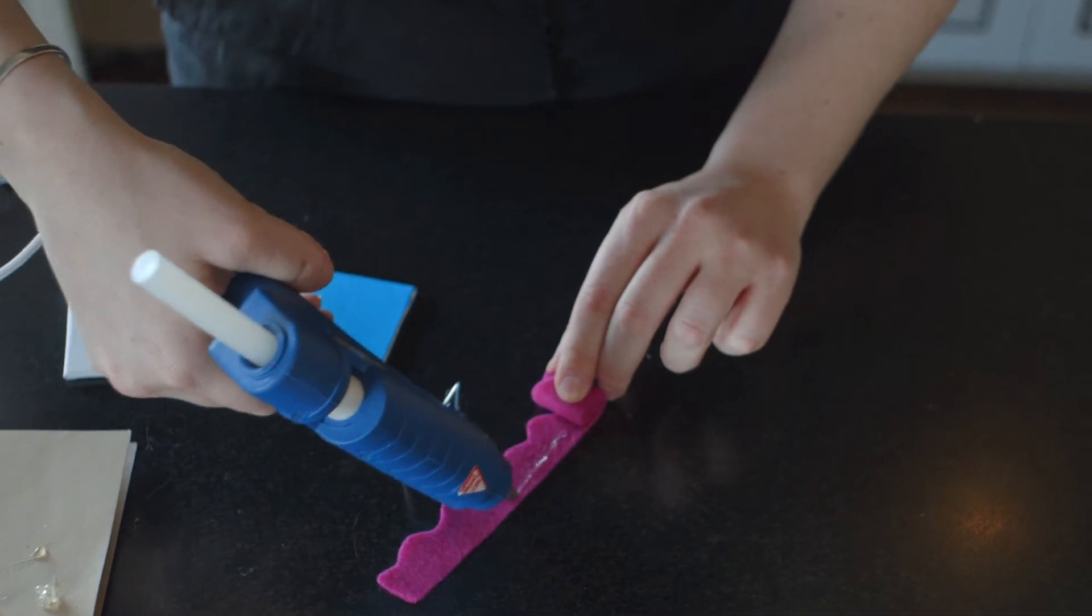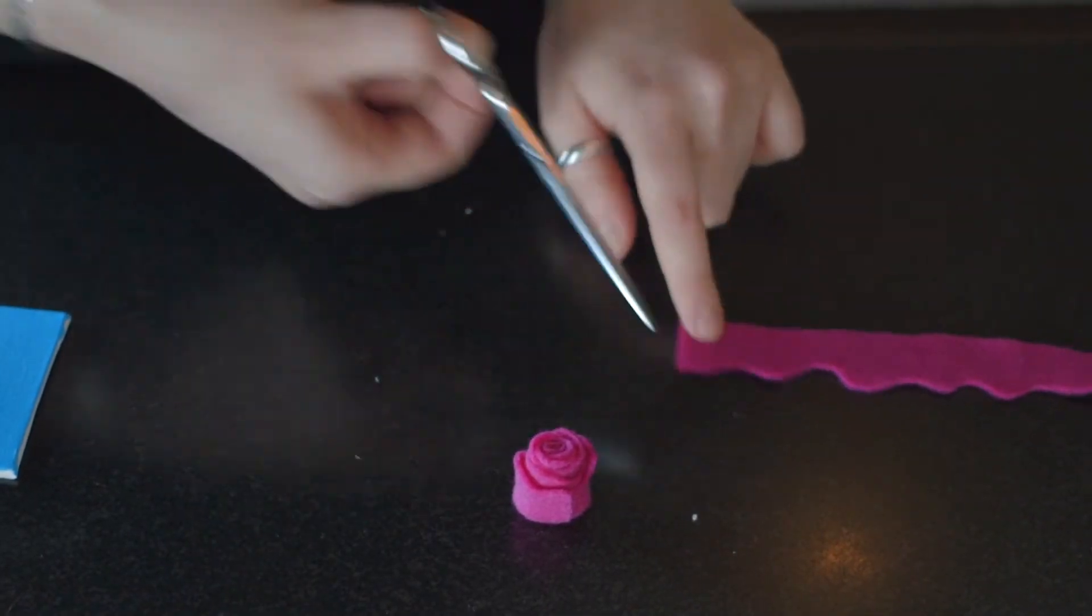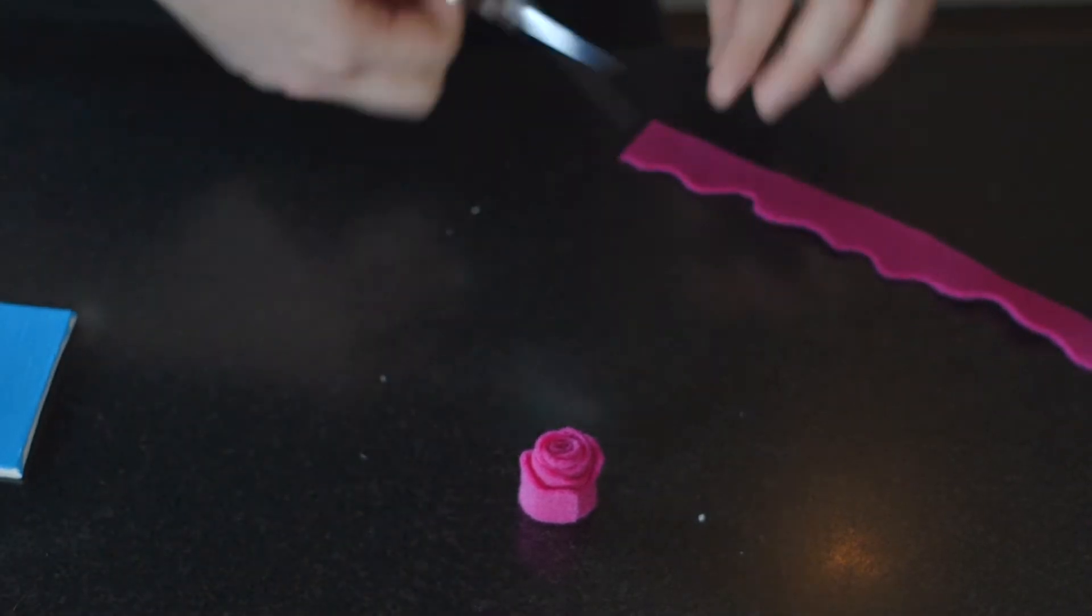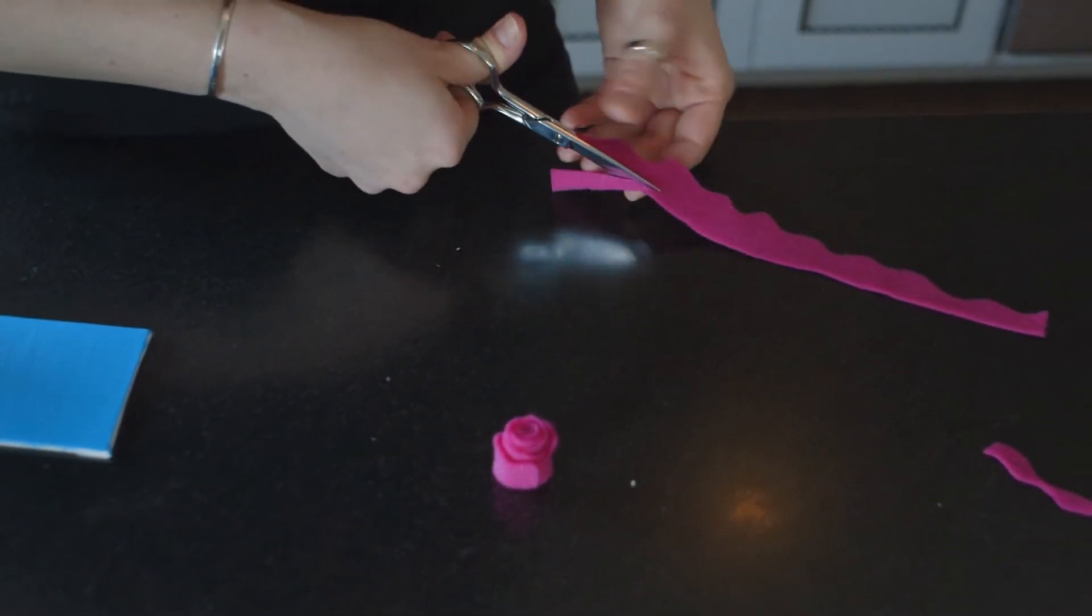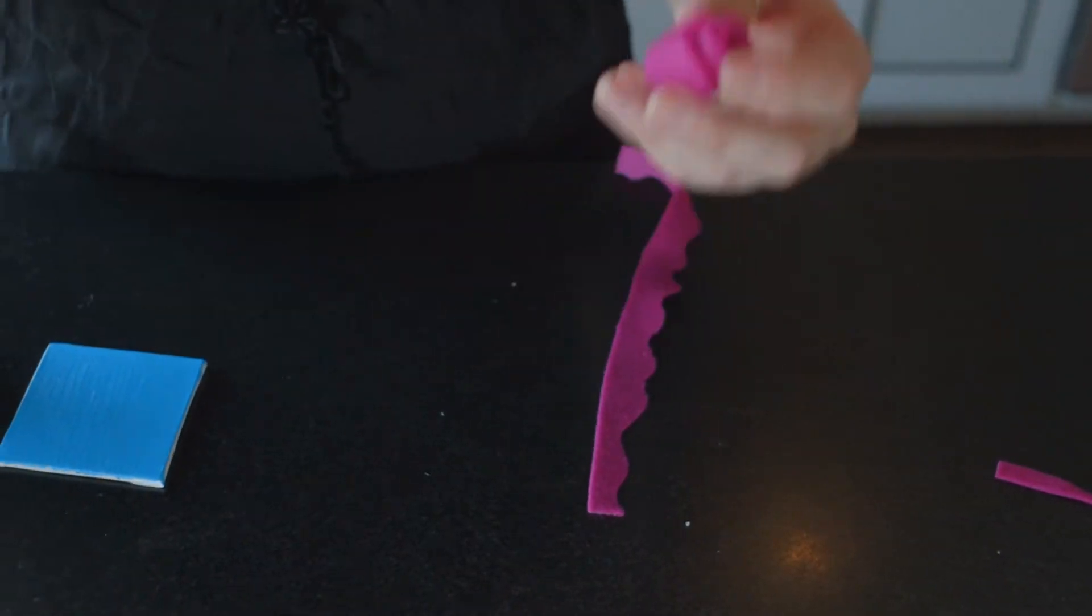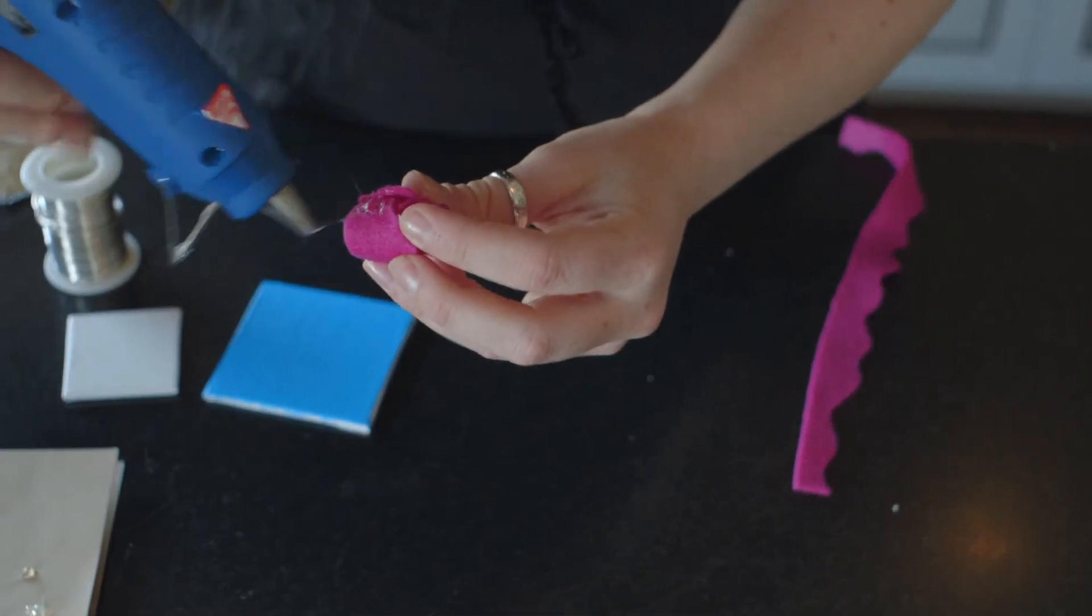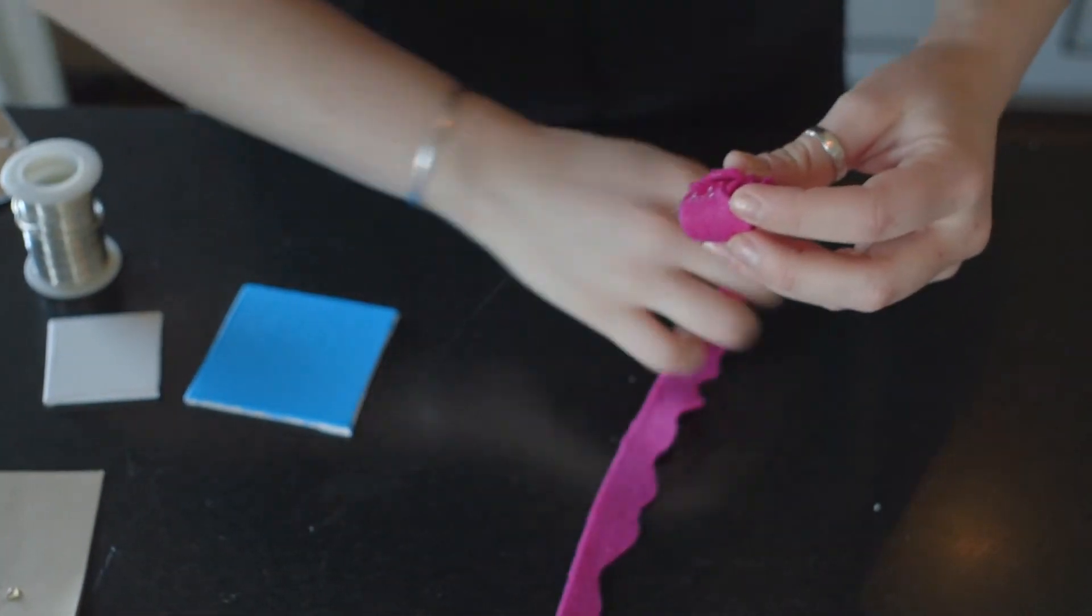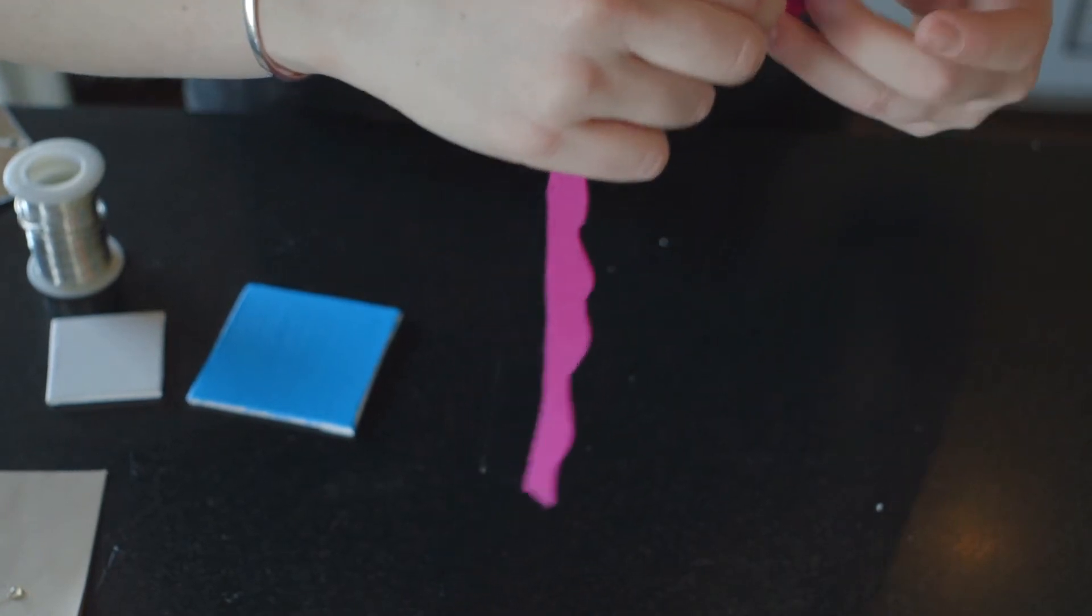Already looking pretty. Then that strip that you cut out before that you're marking, you can actually squeeze the glue. Just clean that up a little bit. And add it right onto that part where you finished up. Just glue a little bit. And keep on going.